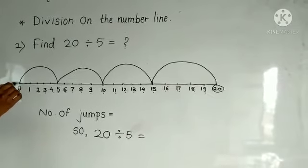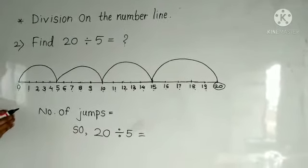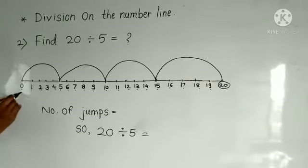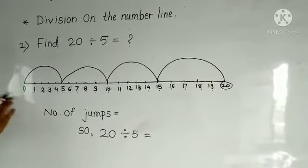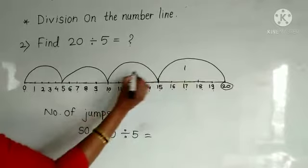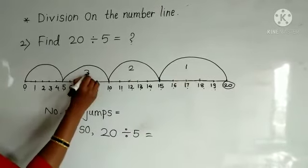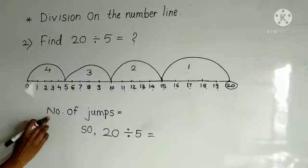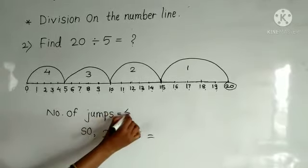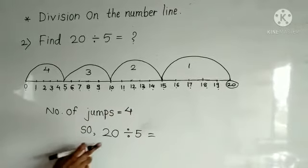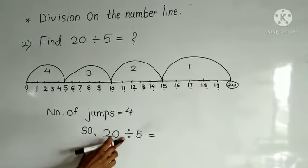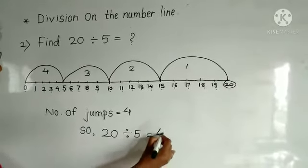Continue jumping backwards by 5 till you come to 0. Now count the jumps: 1, 2, 3, 4. Number of jumps is 4. So our answer is 20 divided by 5 equals 4.